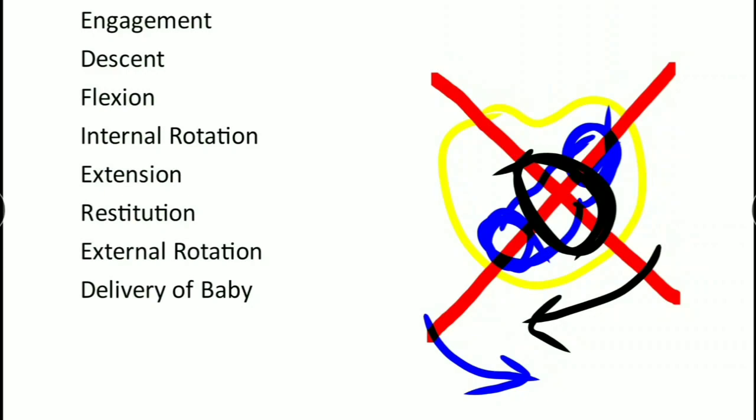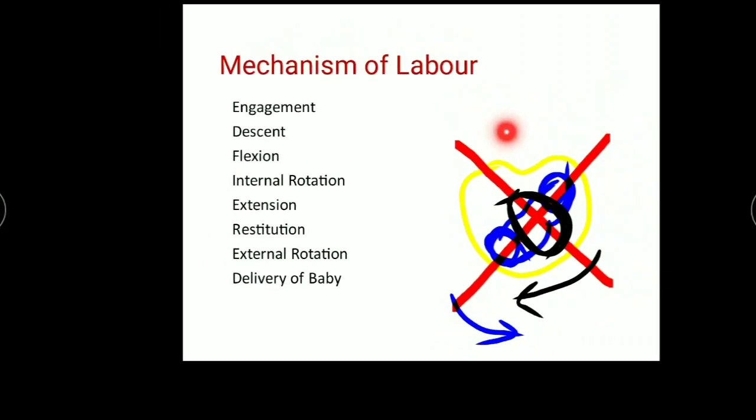Whatever the position - if there is twisting there is untwisting outside the body. If there is internal rotation, there has to be restitution, and along with that an external rotation also. Internal rotation is in one direction; restitution and external rotation occur in just the opposite direction. After that there is delivery of the whole baby - this is the mechanism of labour.